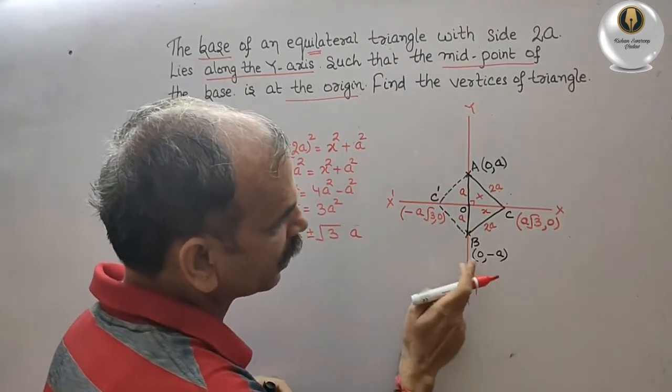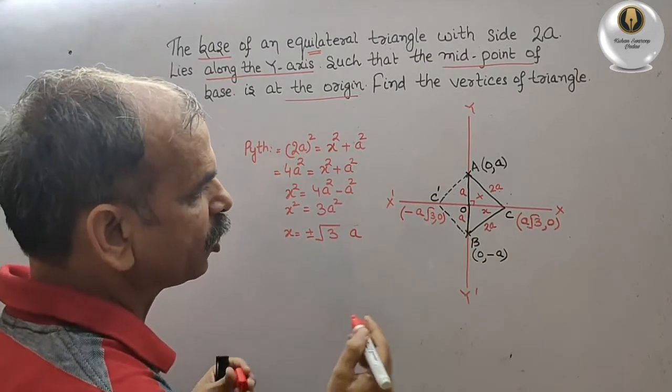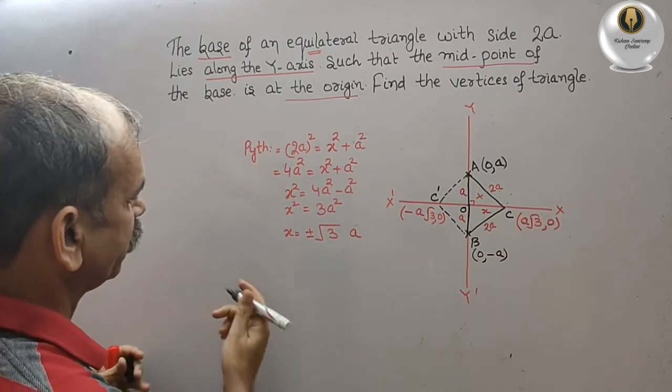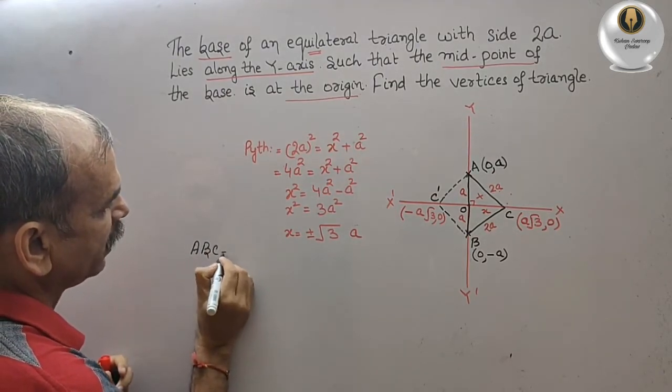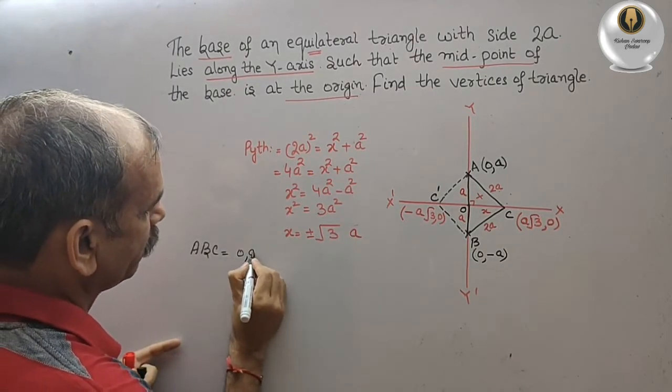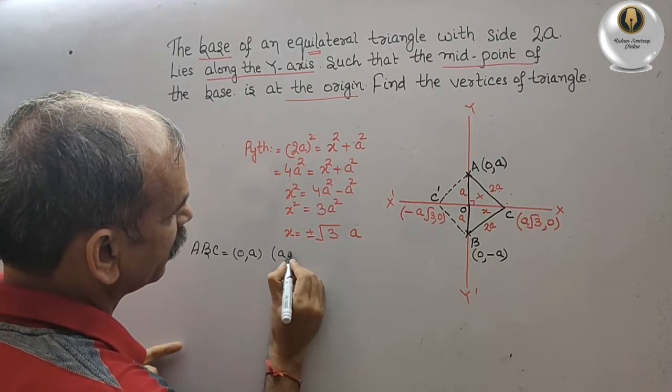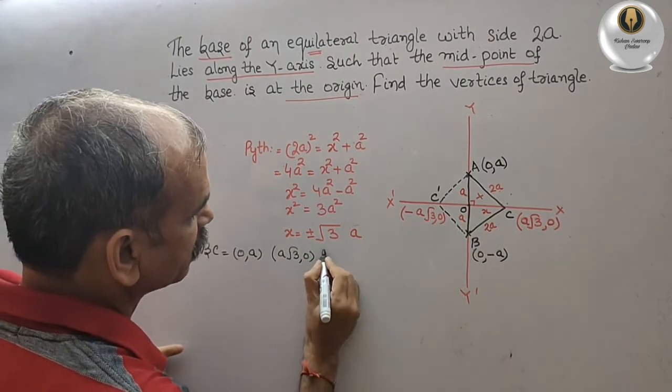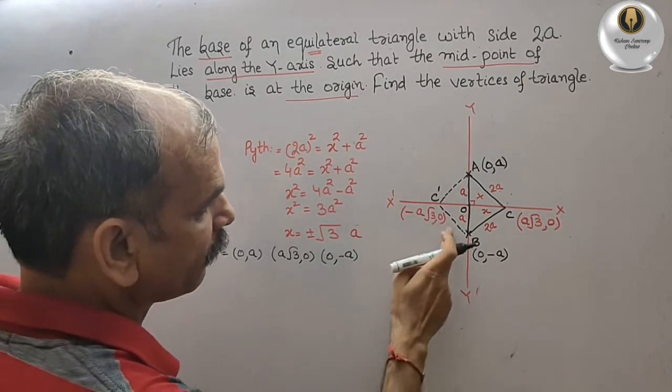So A root 3 comma 0, so the coordinates of the triangle are: first is your A, B, C. So we will write that only. In A, B, C, coordinates are 0 comma A, second is A root 3 comma 0, and third is 0 comma minus A.